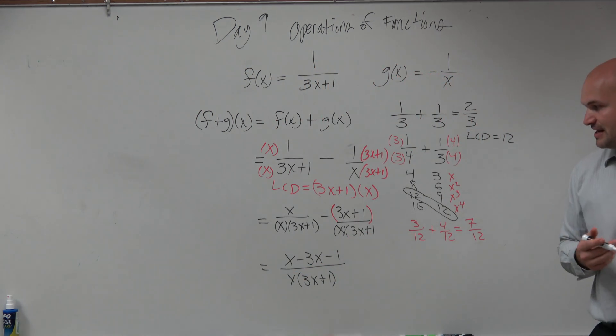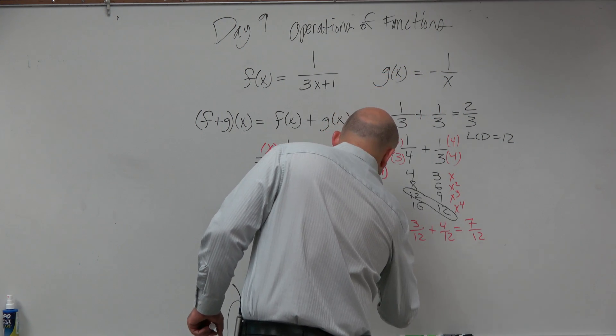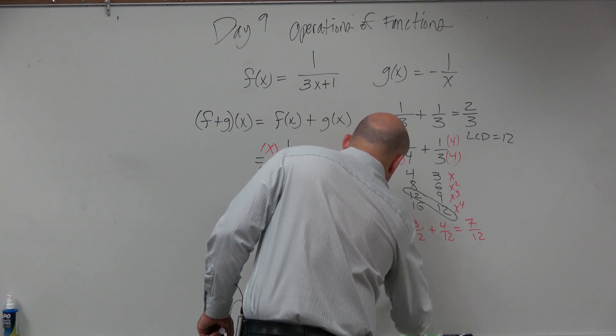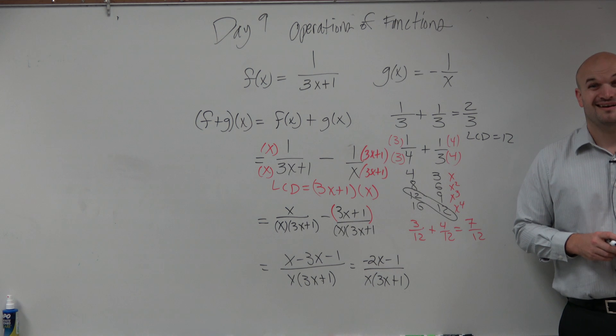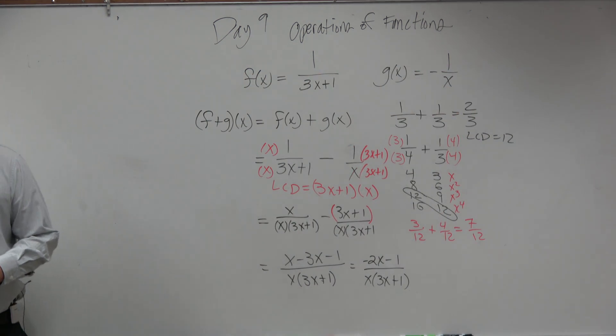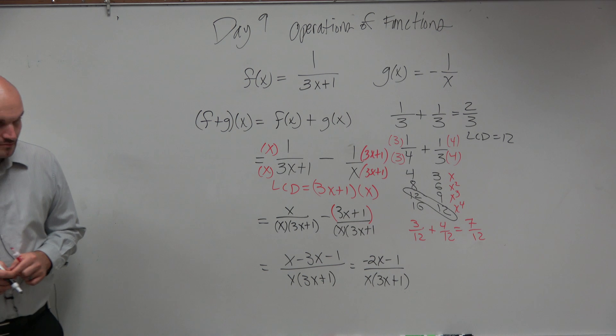Now we can go ahead and simplify this. We can do x minus 3x. So if you have a dollar, you owe me $3, you now owe me negative 2x minus 1 all over x times 3x plus 1. Anybody have any questions on that? And that's just the simplifying part. We didn't even get to the domain. Again, I am doing the harder ones for you guys. You'll have the easier ones.